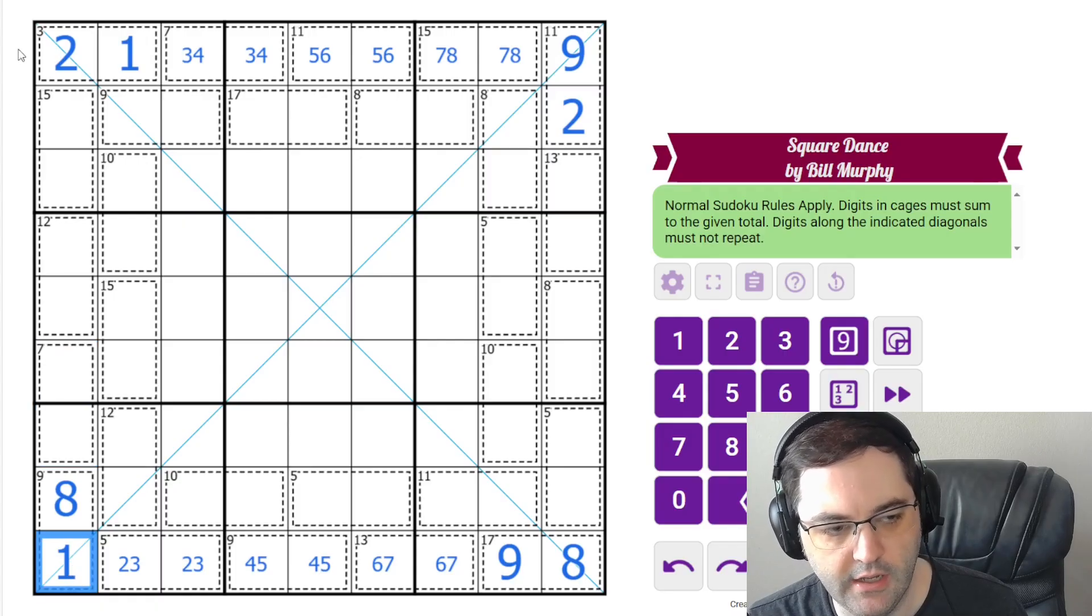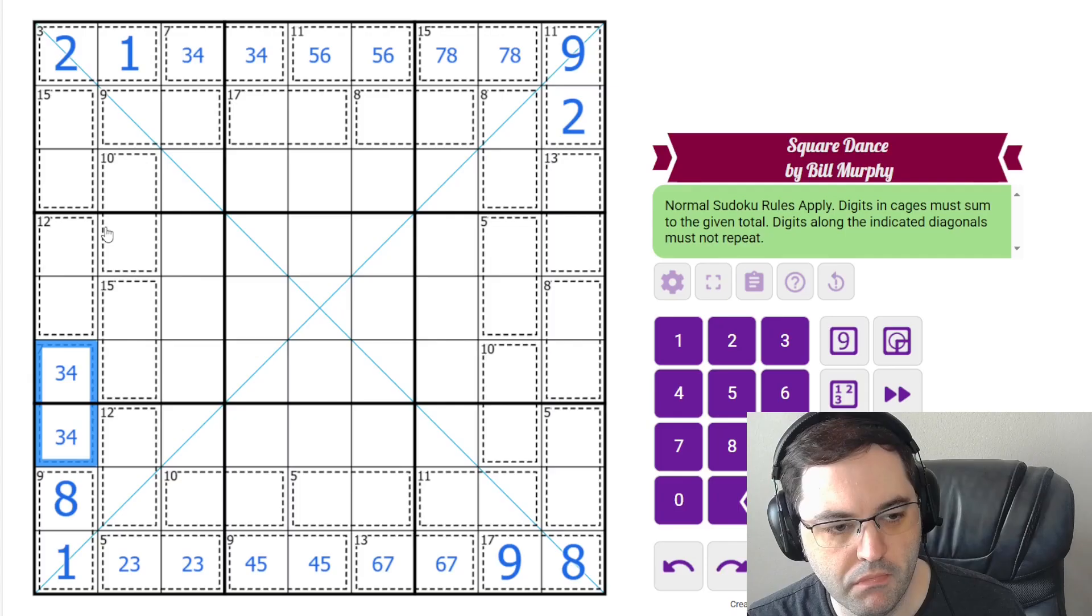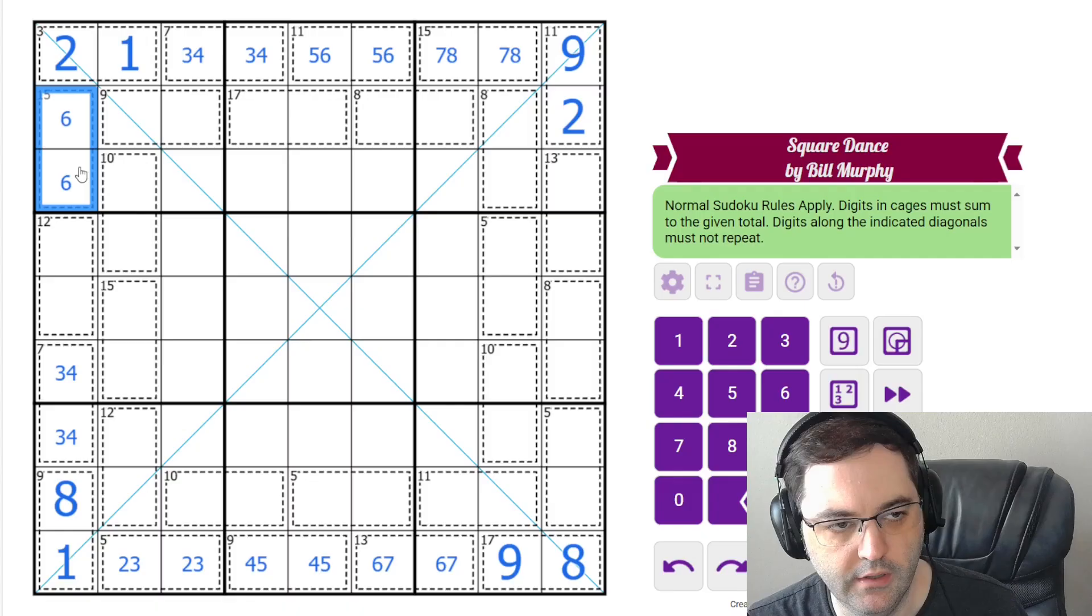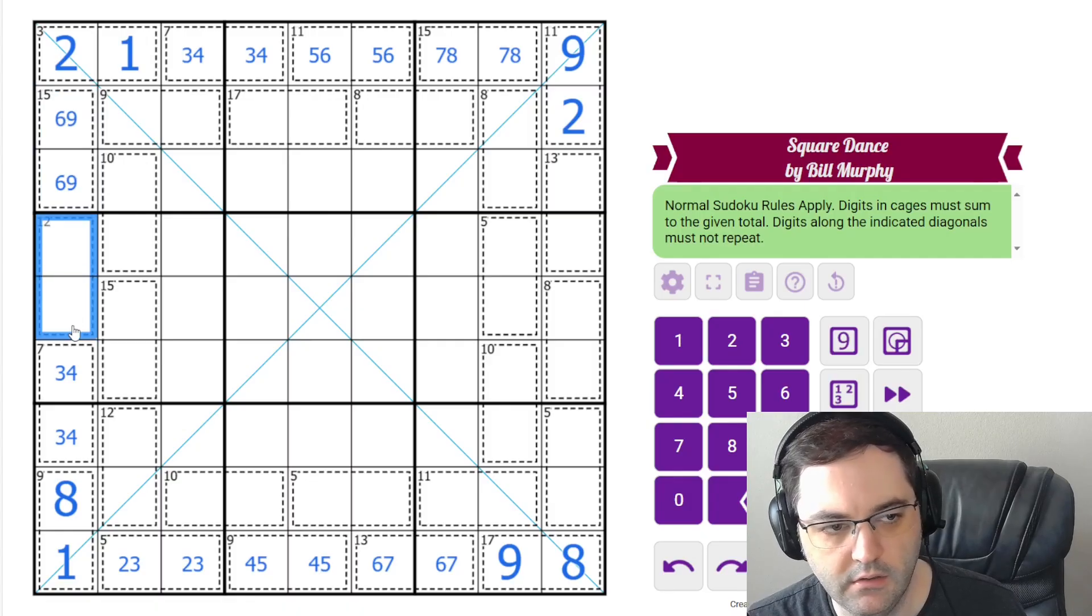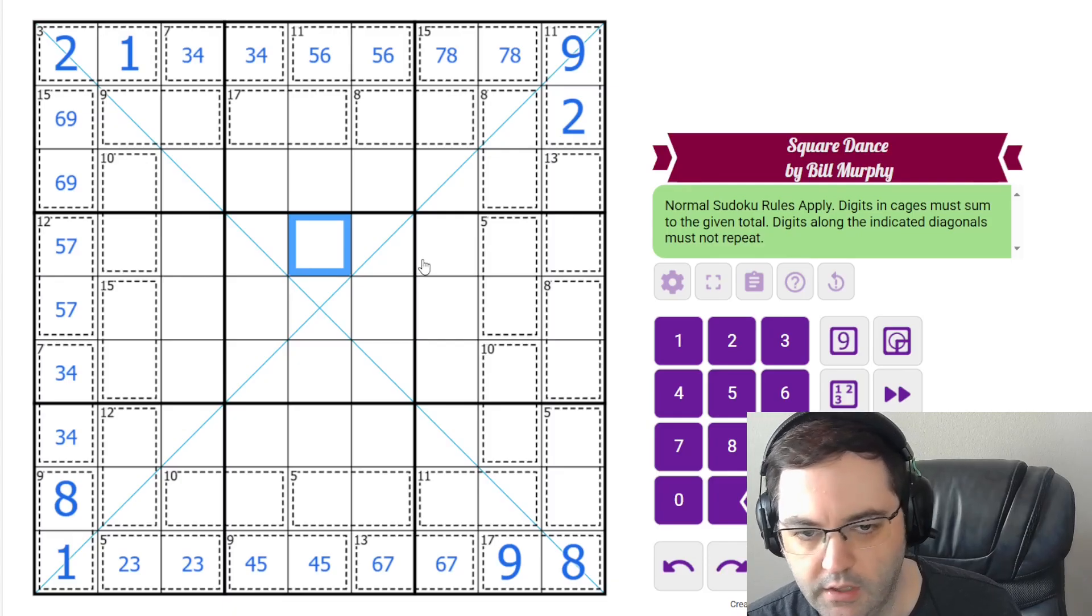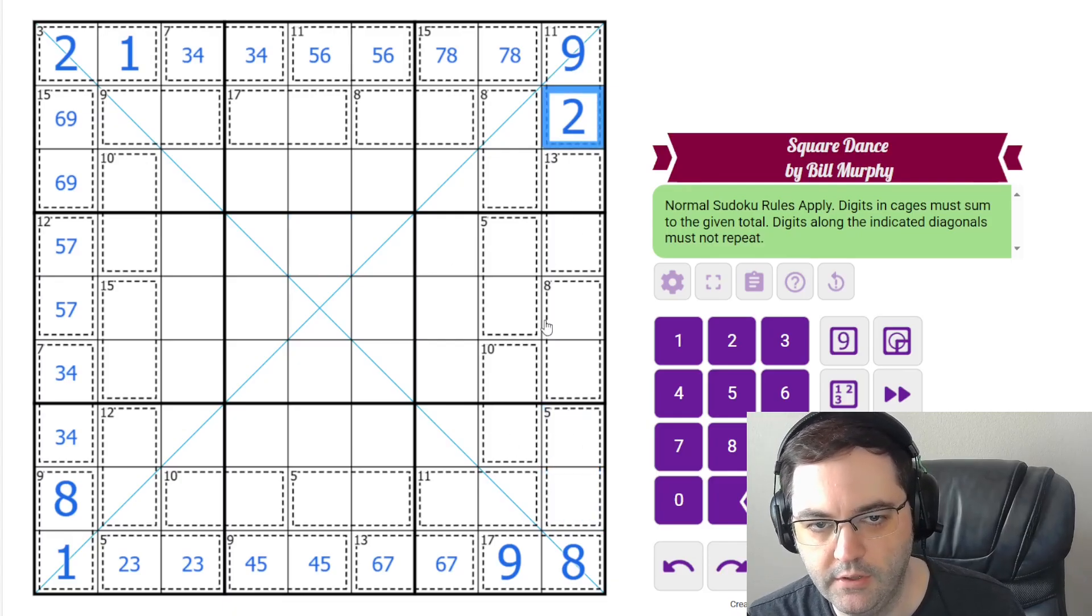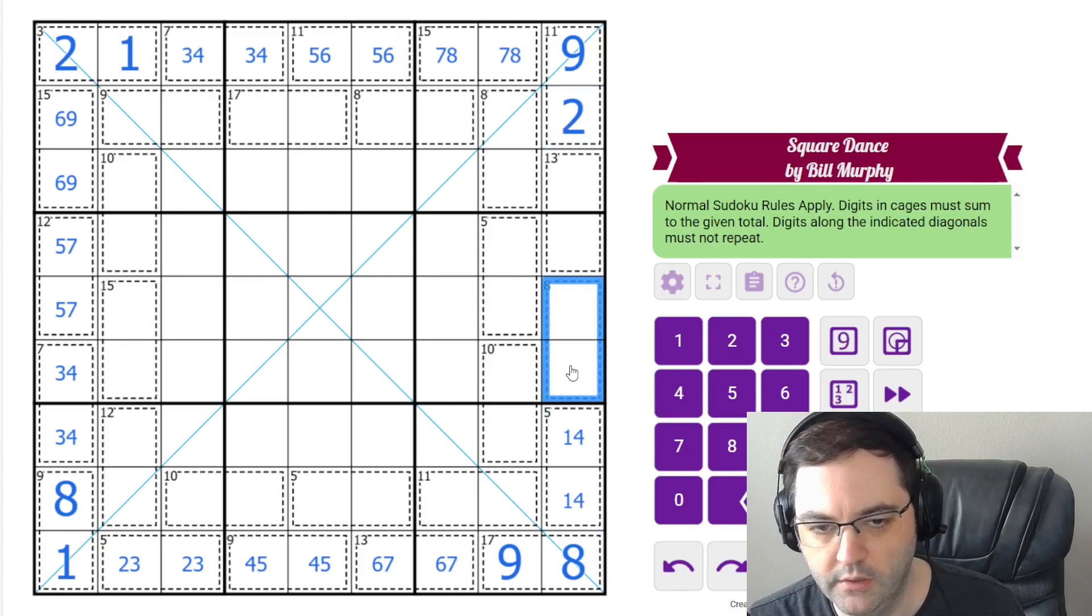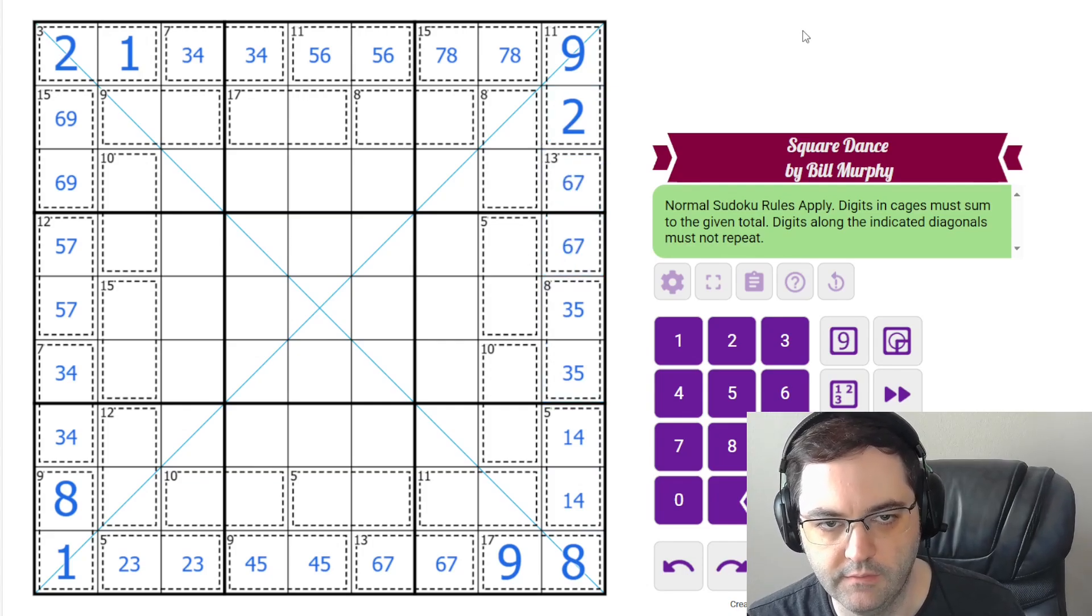This 7 cage now, there's a 1 and 2 in the column, so this must also be 3, 4. And the 15 can't contain an 8. The only other way to do it is 6 and 9. And that's going to leave 5, 7 in the 12 cage. The 5 here can't contain a 2, so that must be 1, 4. The 8 can't contain a 2 or a 1, so that must be 3, 5. And the 13 is 6, 7 left over.